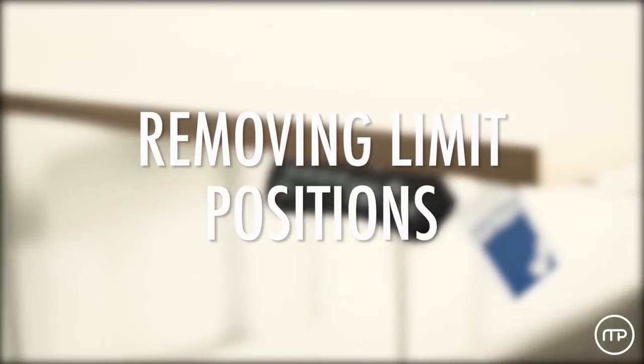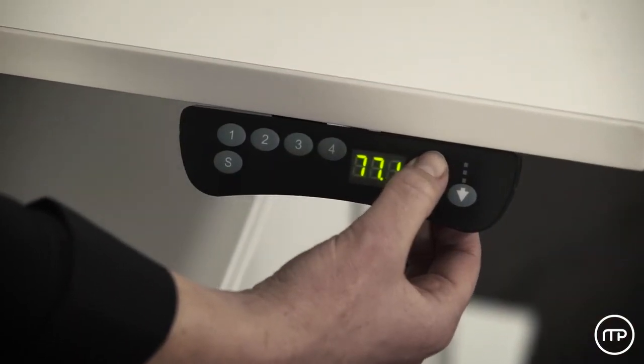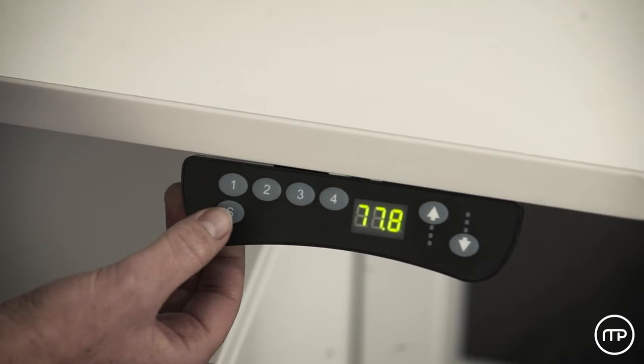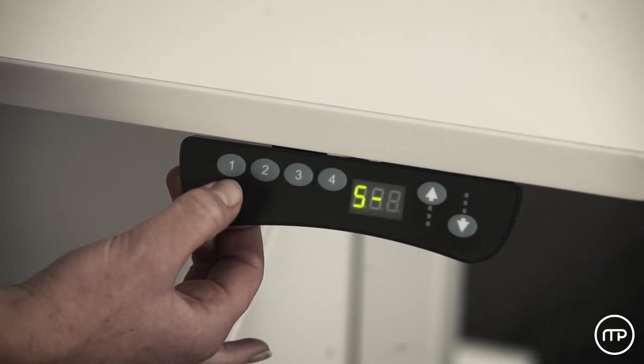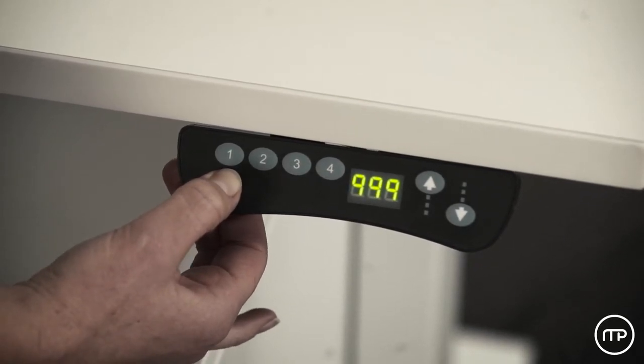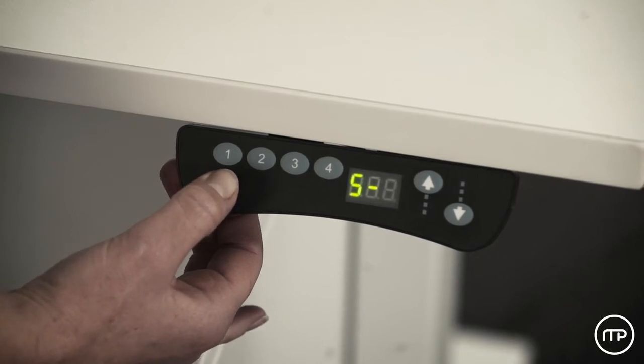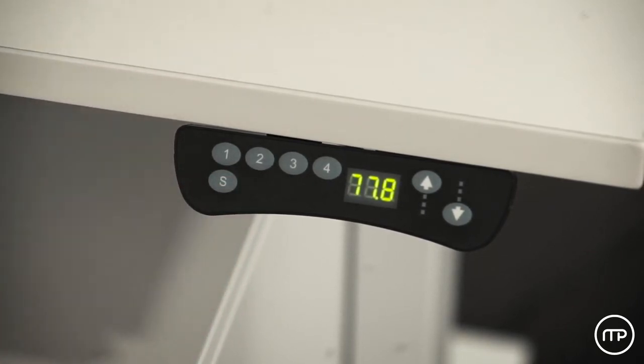Removing limit positions: Move the worktop into a different height than either the upper or lower limits. Within three seconds, press and hold the S button until the LCD display flashes S. Then in quick succession, press the S button seven times until the LCD display changes to 555. You now have cleared any upper or lower limits that were stored.